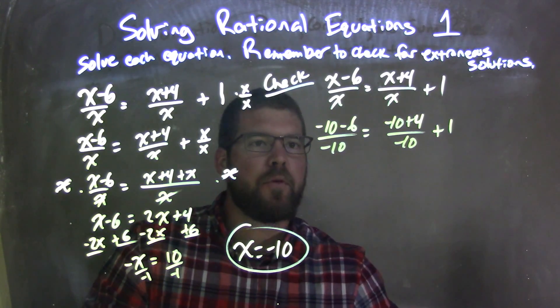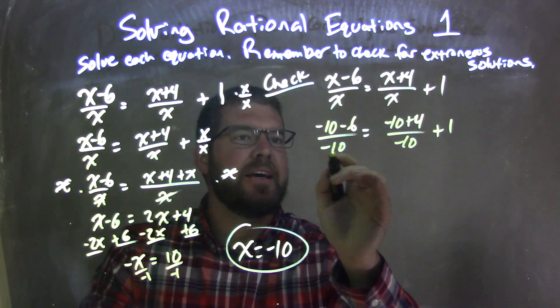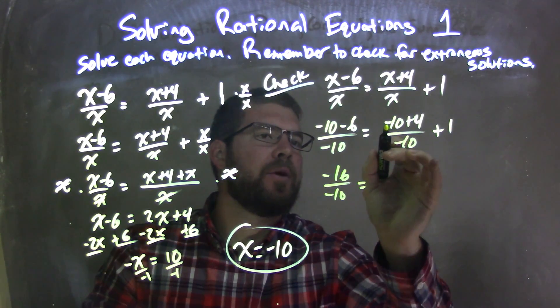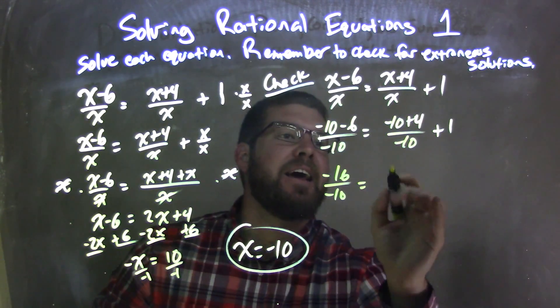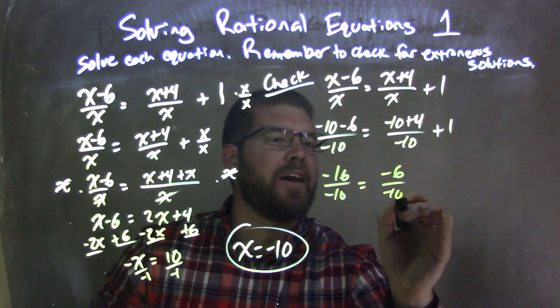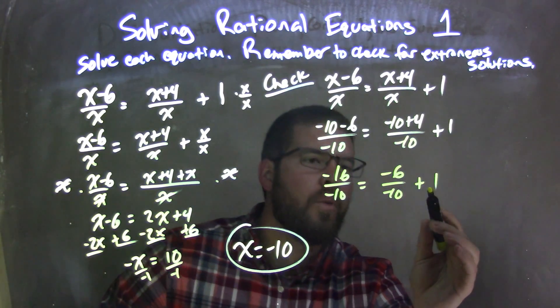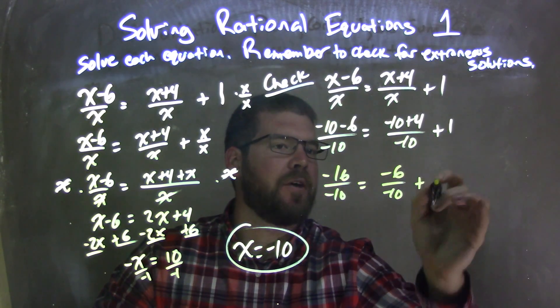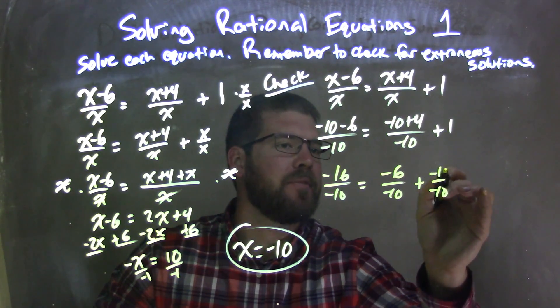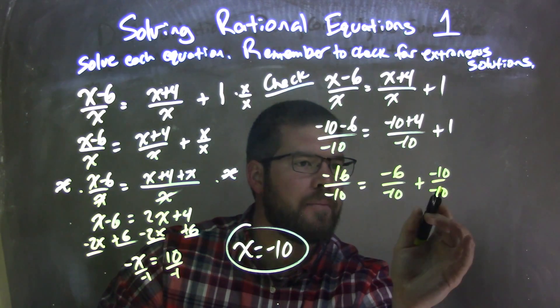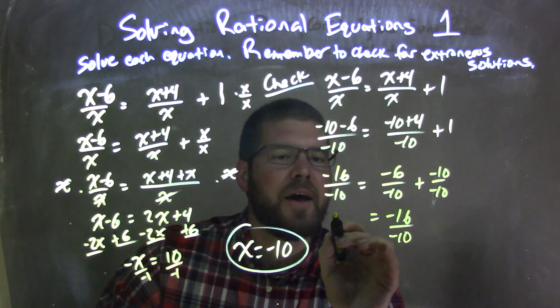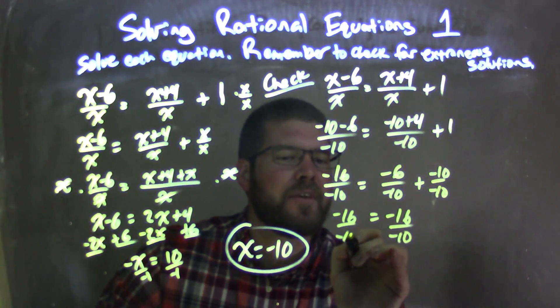Okay, so now let's simplify that. Negative 10 minus 6 is a negative 16 over a negative 10 is equal to negative 10 plus 4, which is a negative 6 over negative 10 plus 1. Well, 1 is really negative 10 over 10. So I'm going to write that to be instead of plus 1 and negative 10 over 10, same fraction. That allows me to combine the two fractions, give me negative 6 plus negative 10, which is negative 16 over negative 10, and we have negative 16 over negative 10.